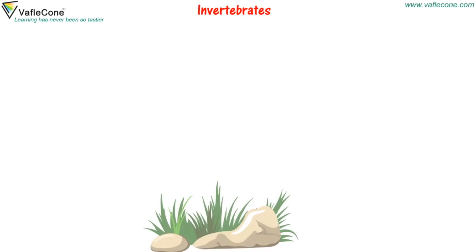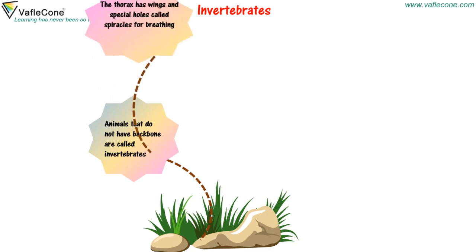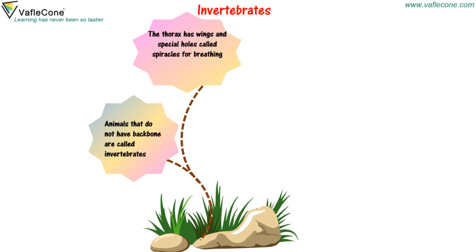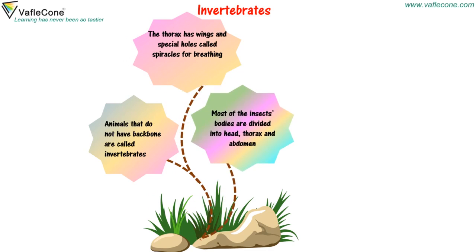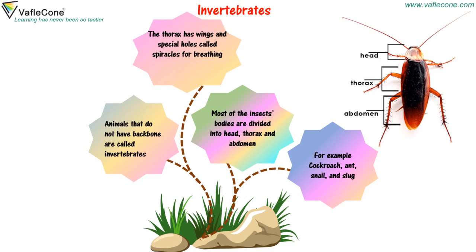Animals that do not have a backbone are called invertebrates. The thorax has wings and special holes called spiracles for breathing. Most insect bodies are divided into head, thorax, and abdomen. For example, cockroach, ant, snail, and slug.